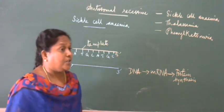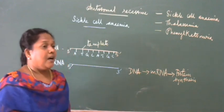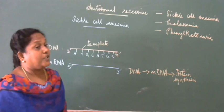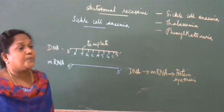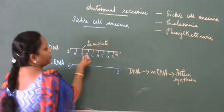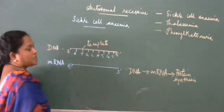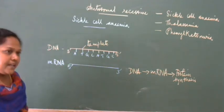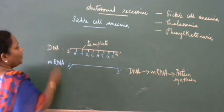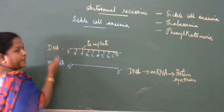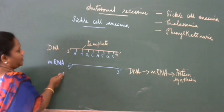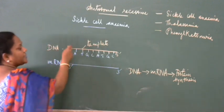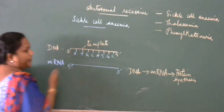The nitrogenous bases in DNA are: adenine (A), thymine (T), guanine (G), and cytosine (C). Adenine and guanine are called purines; thymine and cytosine are called pyrimidines. This information is present in the DNA. The process of copying this message from DNA to mRNA is called transcription.